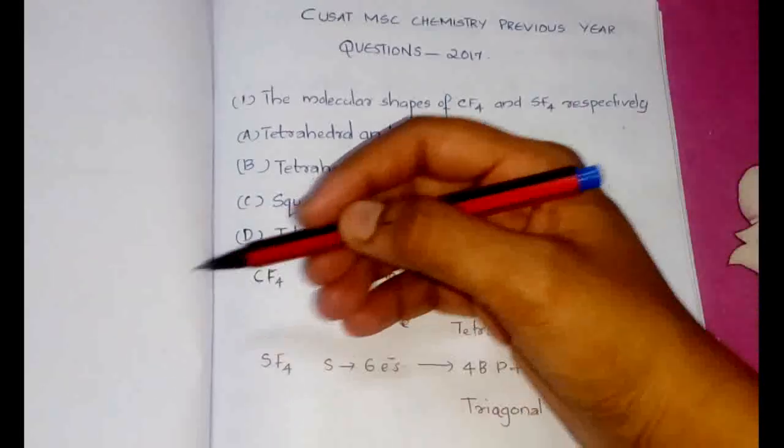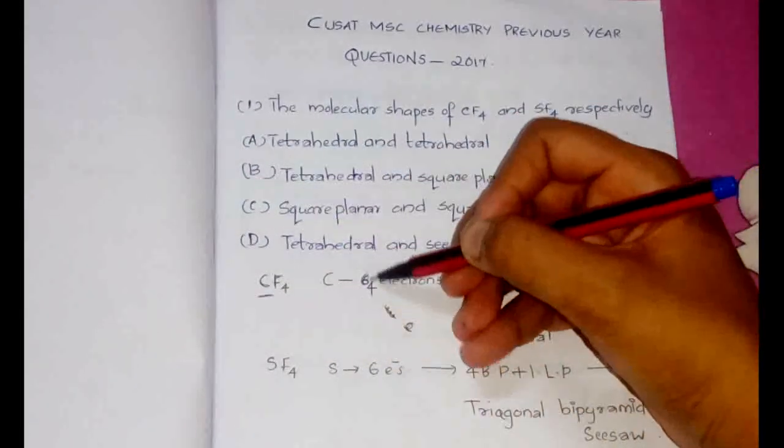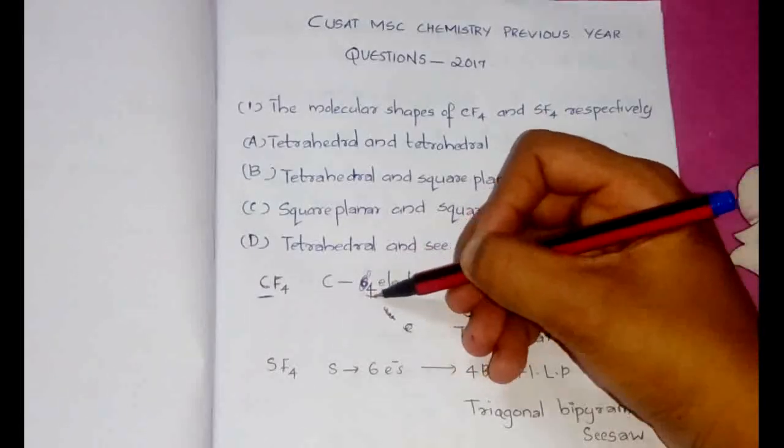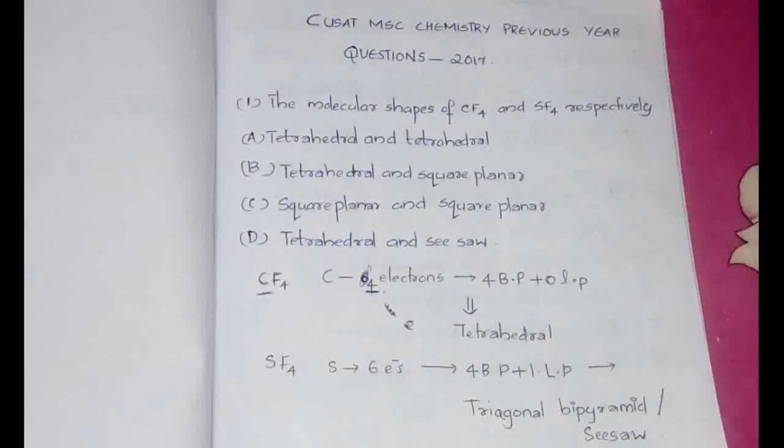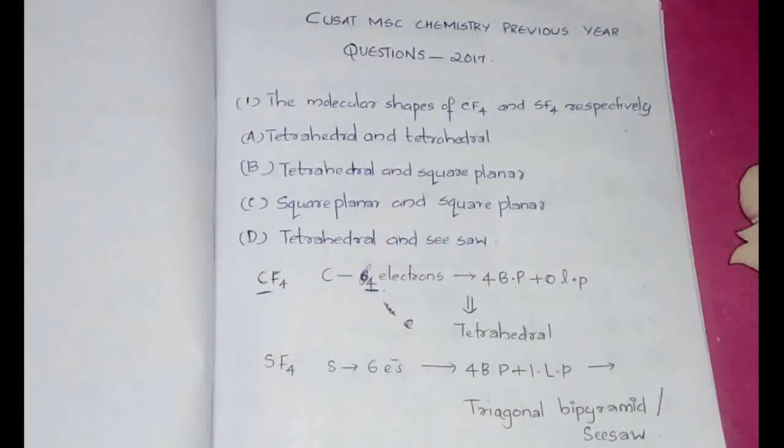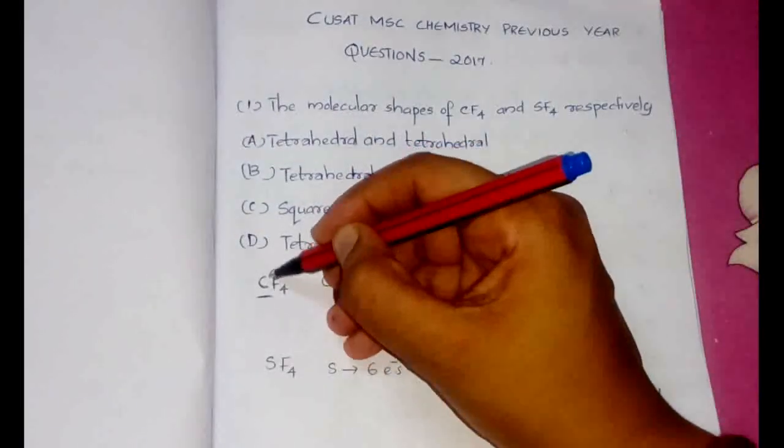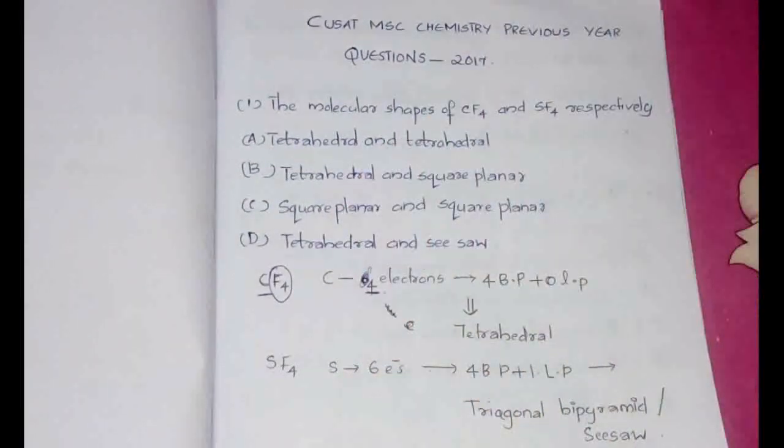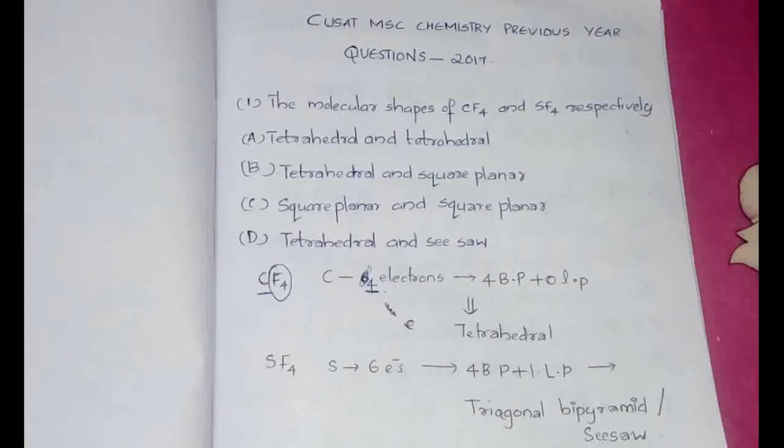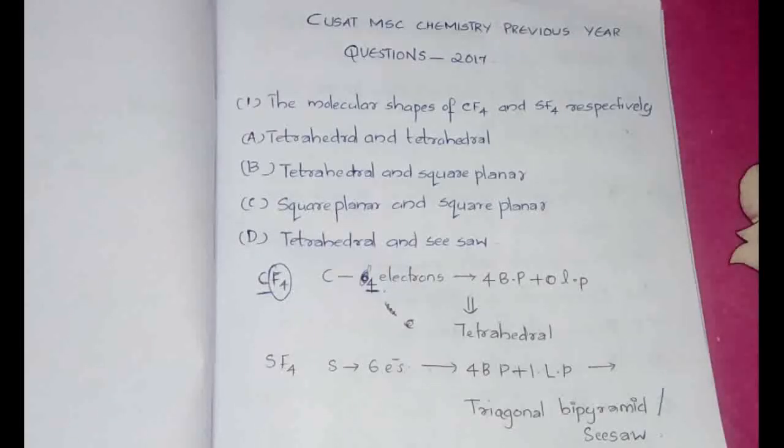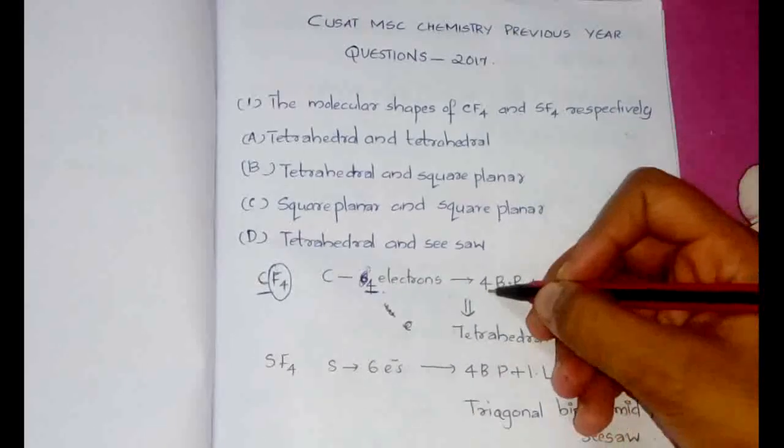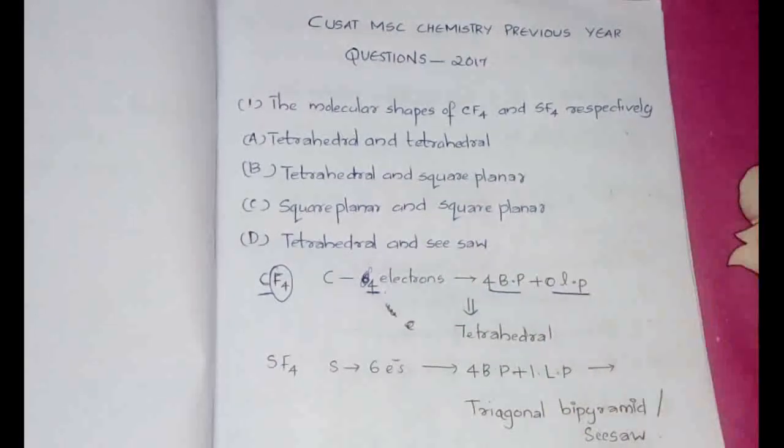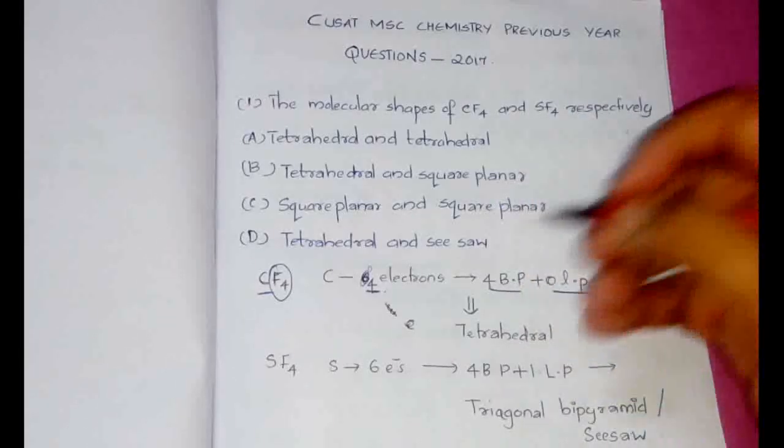We will be taking the central atom which is here the carbon. The total number of electrons in carbon is four. Then we will be seeing how many single bonded, I mean one electron species are present. Like for example, valence of fluorine is one, so there will be a single bond between carbon and how many such fluorines are there? Four. So all the four electrons go as bond pair.